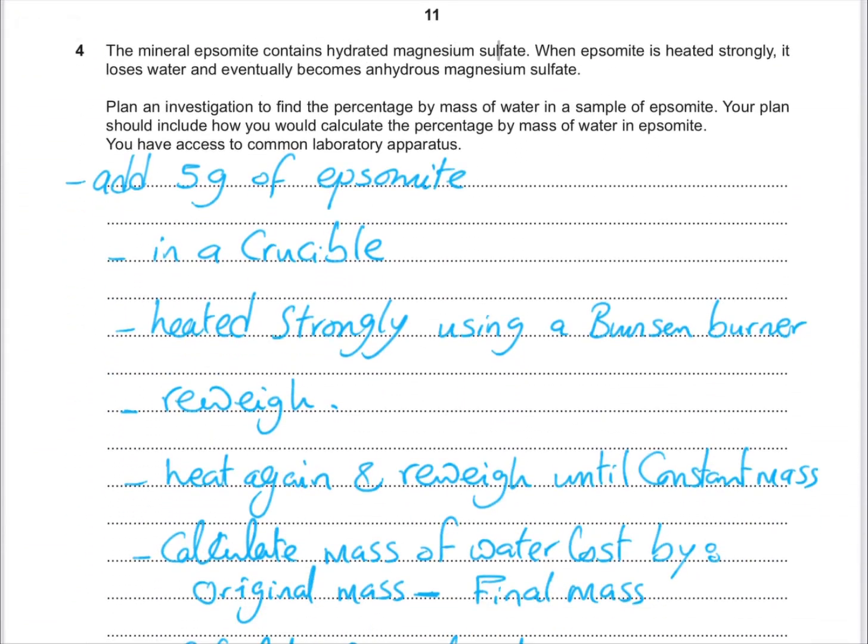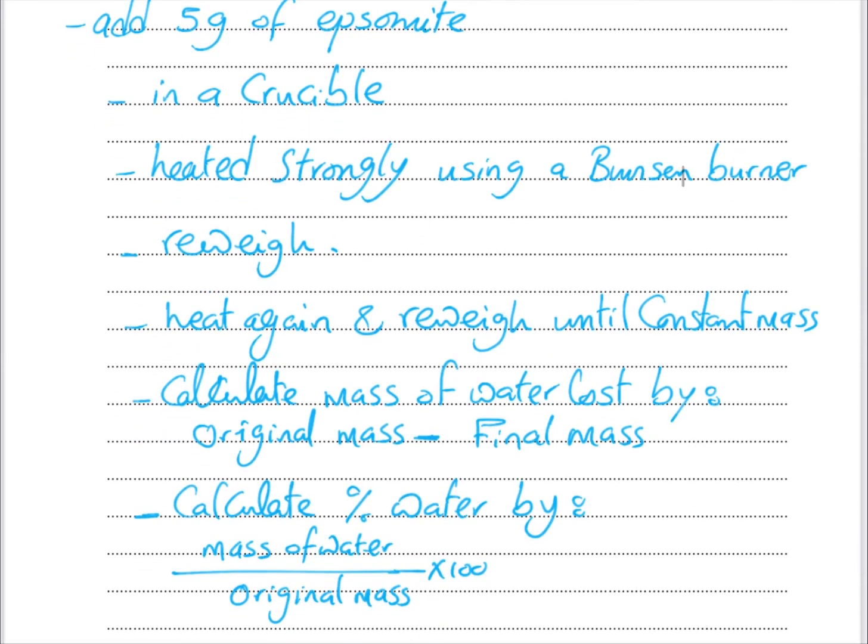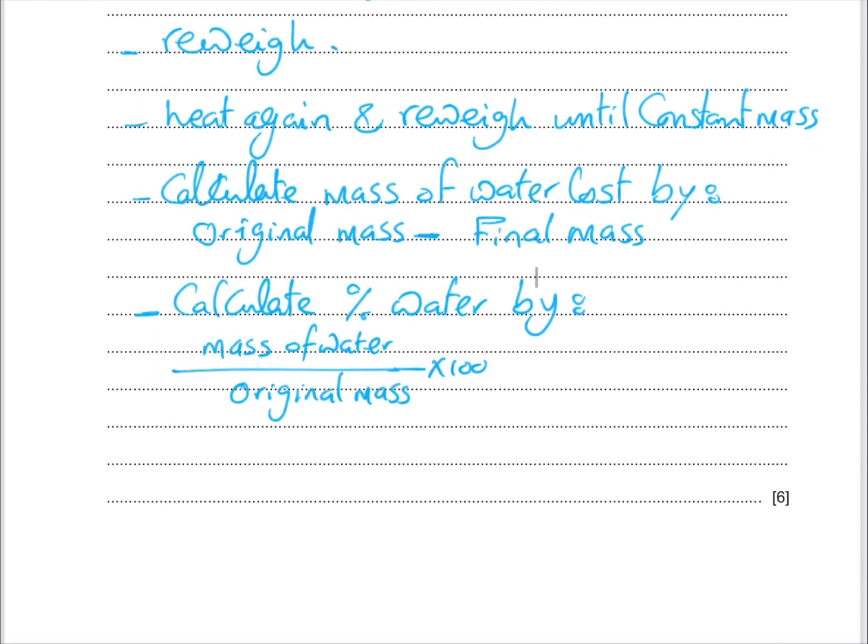Epsomite contains hydrated magnesium sulfate. When Epsomite is heated strongly it loses water and eventually becomes anhydrous magnesium sulfate. There is an investigation to find the percentage by mass of water in a sample of Epsomite. Your plan should include how you could calculate the percentage of mass of water in Epsomite. You have access to common laboratory apparatus. You can add 5 grams of Epsomite and heat strongly using a Bunsen burner and reweigh. Heat again until constant mass. Calculate the mass of water: original mass of 5 grams minus the final mass. The percent of water will be mass of water divided by original mass of 5 times 100.